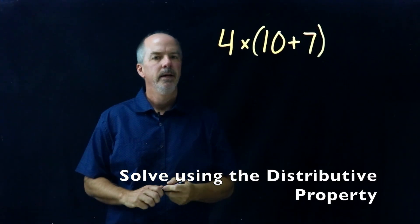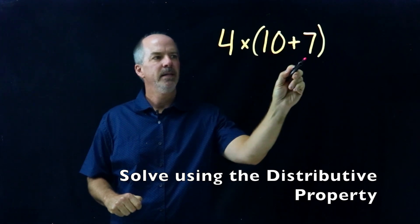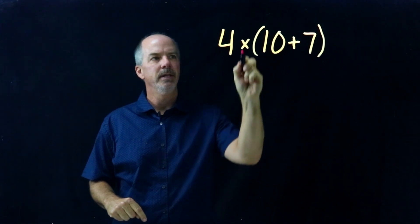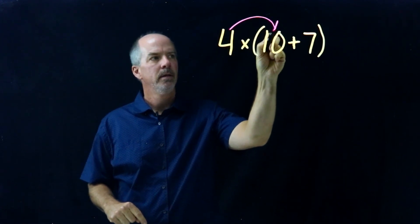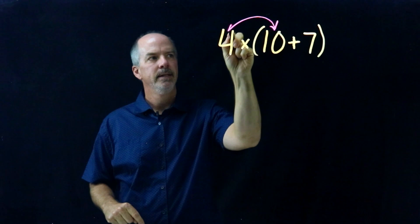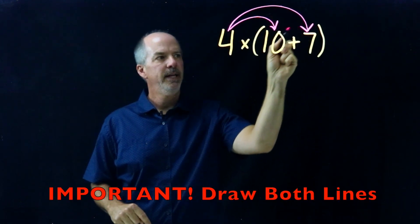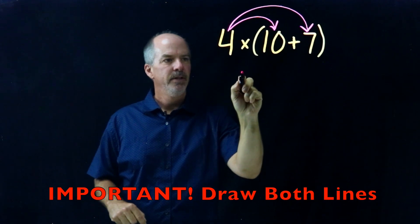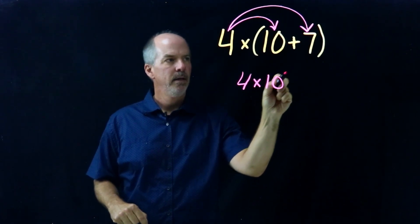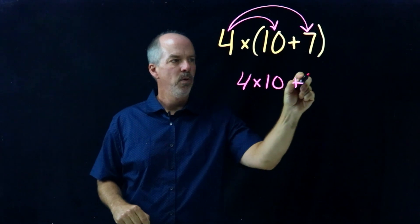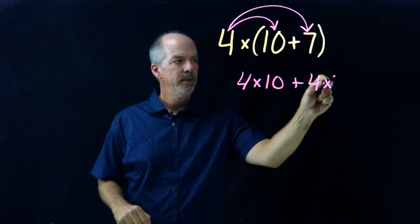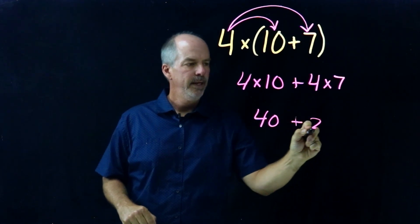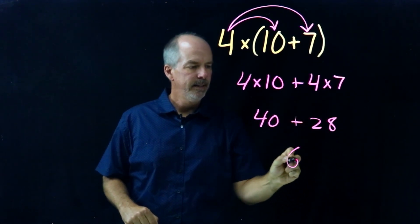Let's do this problem. So we have four times the sum of ten plus seven. We're going to distribute the four into the parentheses. Very important that you draw these lines so that you don't forget to multiply by both ten and the seven. So we have four times ten plus four times seven. So we have forty plus twenty-eight,